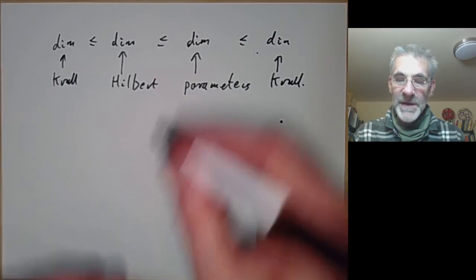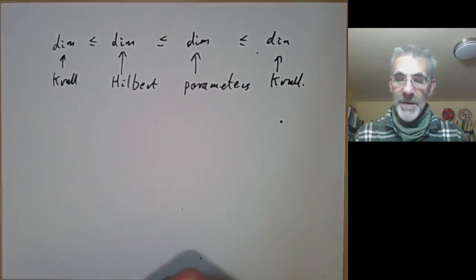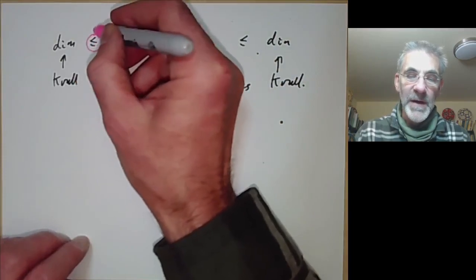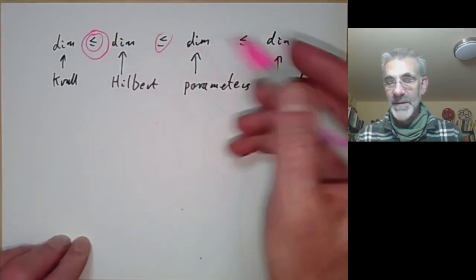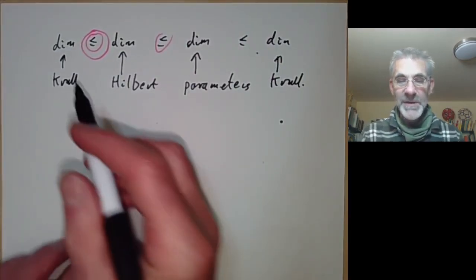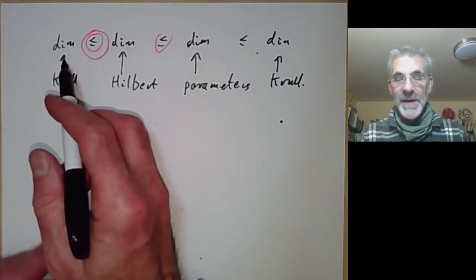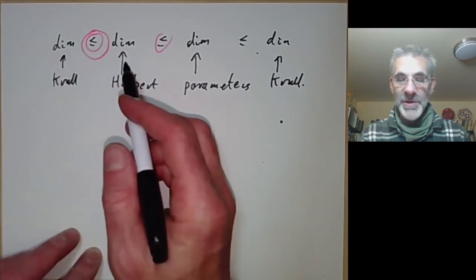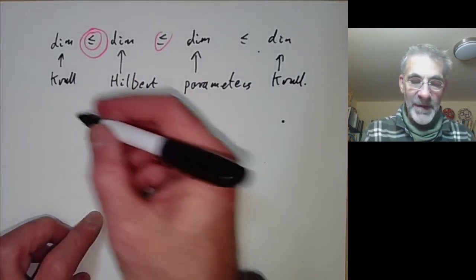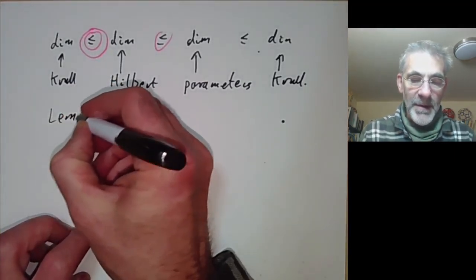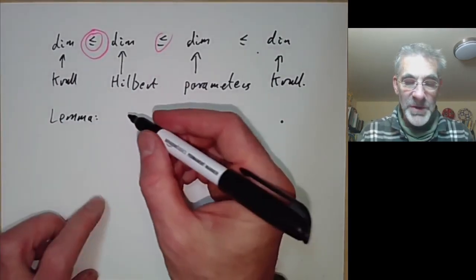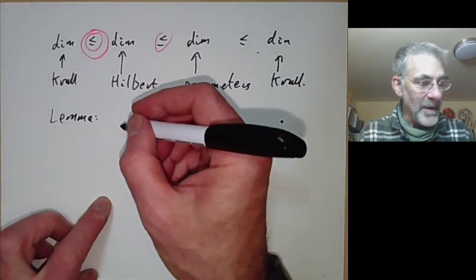In the previous lecture we proved one of these inequalities. What we're going to do this lecture is prove another inequality, and in the next lecture we will prove the remaining one. Before proving the inequality between the Krull dimension and the Hilbert dimension, we're going to establish a lemma showing that quotienting out by an element will often reduce the dimension by one.